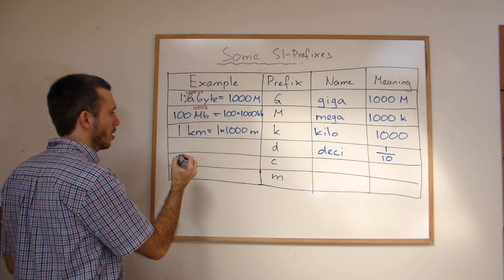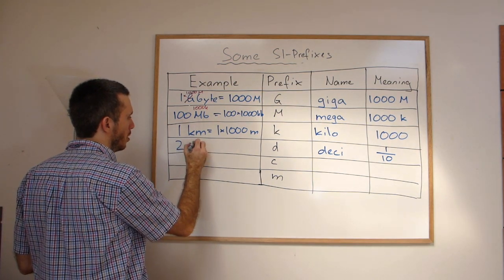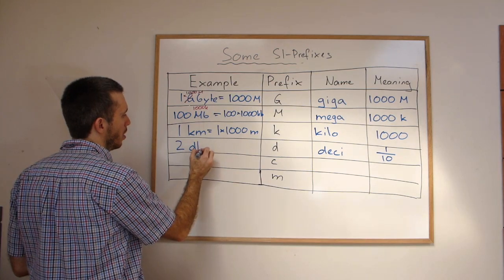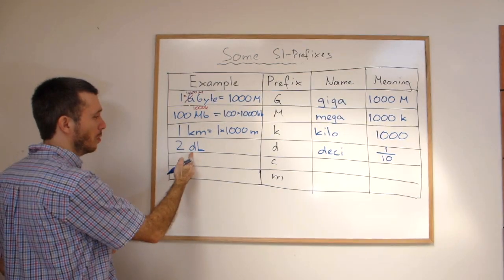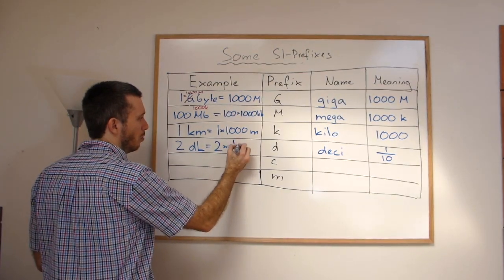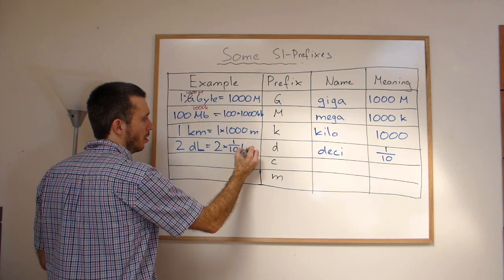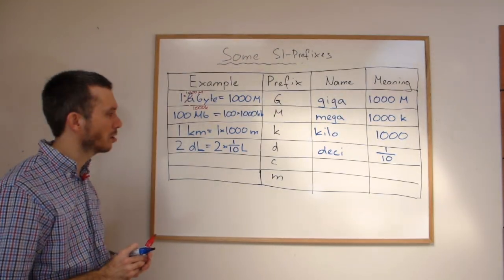An example, for example, you could have a glass of two deciliters. Liters is not really the SI unit, but uses the same style of prefixes. So what does that mean? That this is two times one over 10 liters. So 0.2 liters is two deciliters.